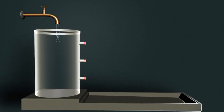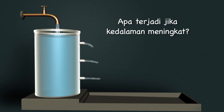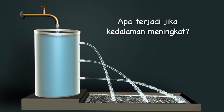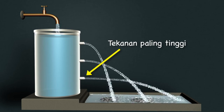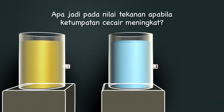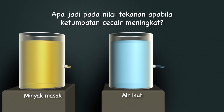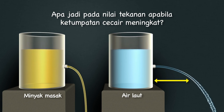Apa akan jadi pada tekanan jika salah satu daripada faktor-faktor tersebut berubah? Kes satu: apa terjadi jika kedalaman meningkat? Apabila kedalaman meningkat, jumlah berat air pada aras tersebut turut meningkat, maka air di bahagian paling bawah akan memancut dengan tekanan yang paling tinggi. Kes dua: apa pula bakal terjadi pada nilai tekanan apabila ketumpatan cecair meningkat? Pada kedalaman yang sama, air laut yang berketumpatan lebih tinggi daripada minyak akan memancut lebih jauh kerana tekanan yang dikenakan adalah lebih besar.